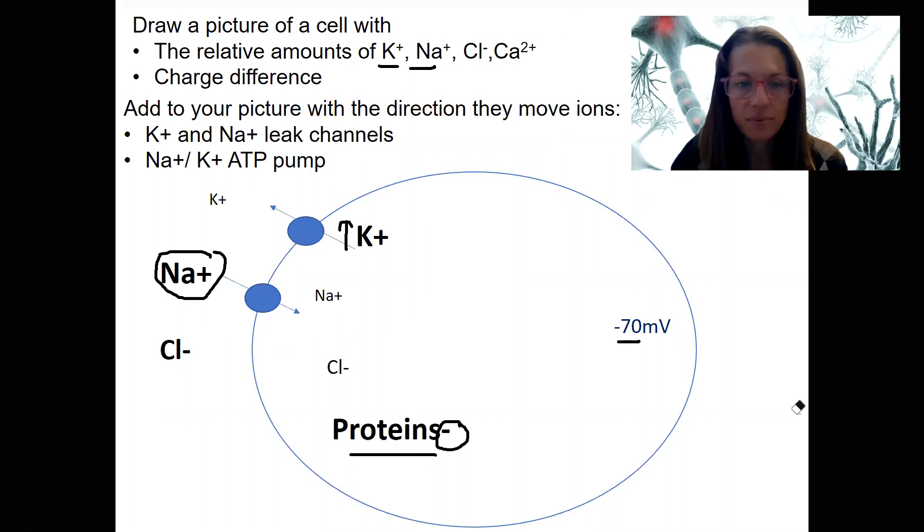If we put in leak channels, potassium and sodium will both move down their electrochemical gradients. So for potassium, this is out. For sodium, this is in. Based on just concentration gradients. This was a leak channel I just drew here.